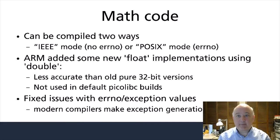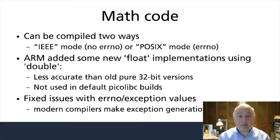Now I'll start going into some of these changes in more detail, starting with the math code. One of the most useful bits of newlib is the math library, which includes implementations of the standard math functions as specified in IEEE 754, C99, and POSIX. Lots of this code came from Sun back in the early 1990s. A couple of years ago, ARM provided some new float code using double-precision intermediates to reduce the number of instructions necessary for these operations. Unfortunately, the resulting code is less accurate than the old Sun code, and it's really only useful on hardware that has 64-bit floats. As a result, PicoLibC disables this code in default builds.